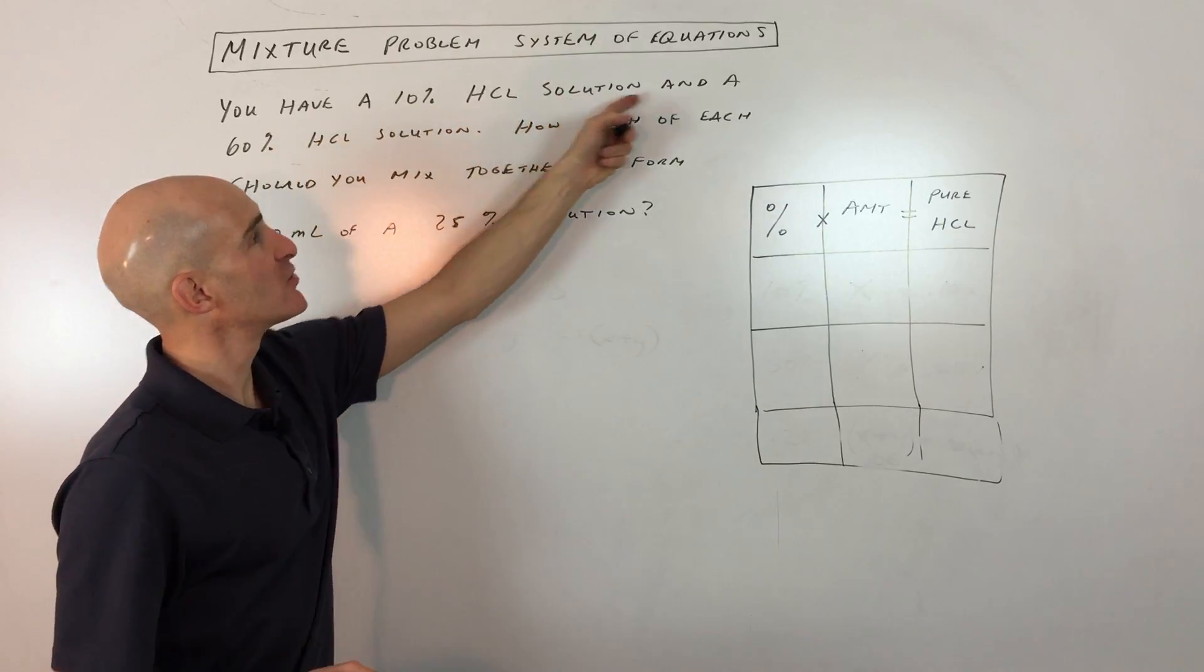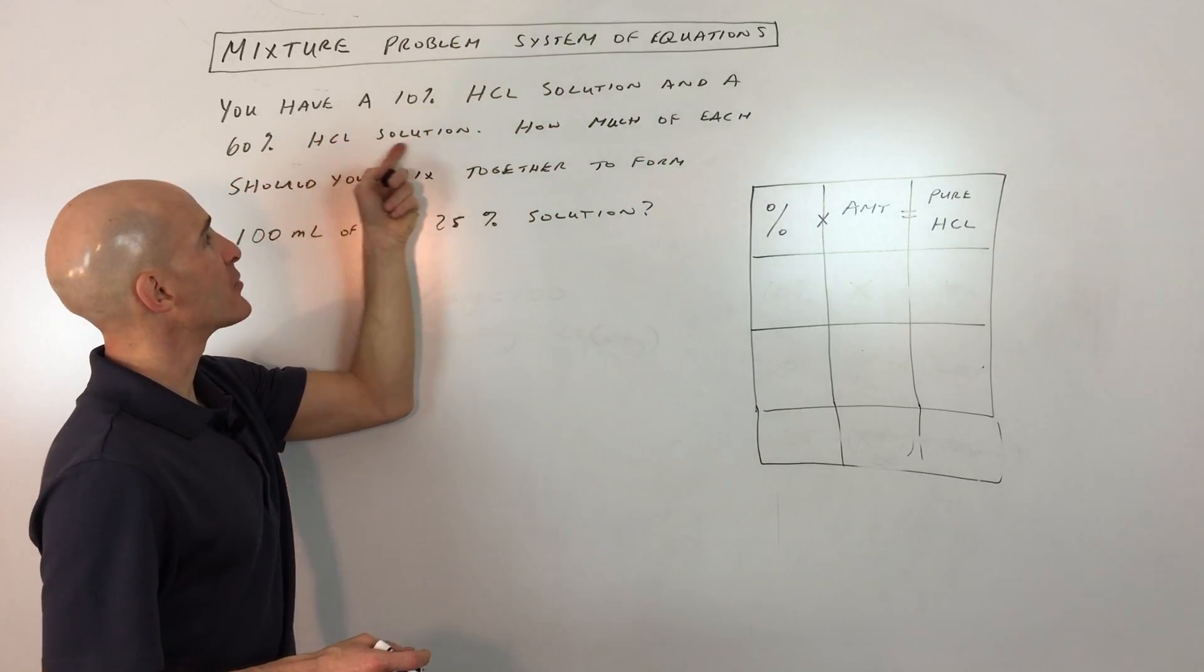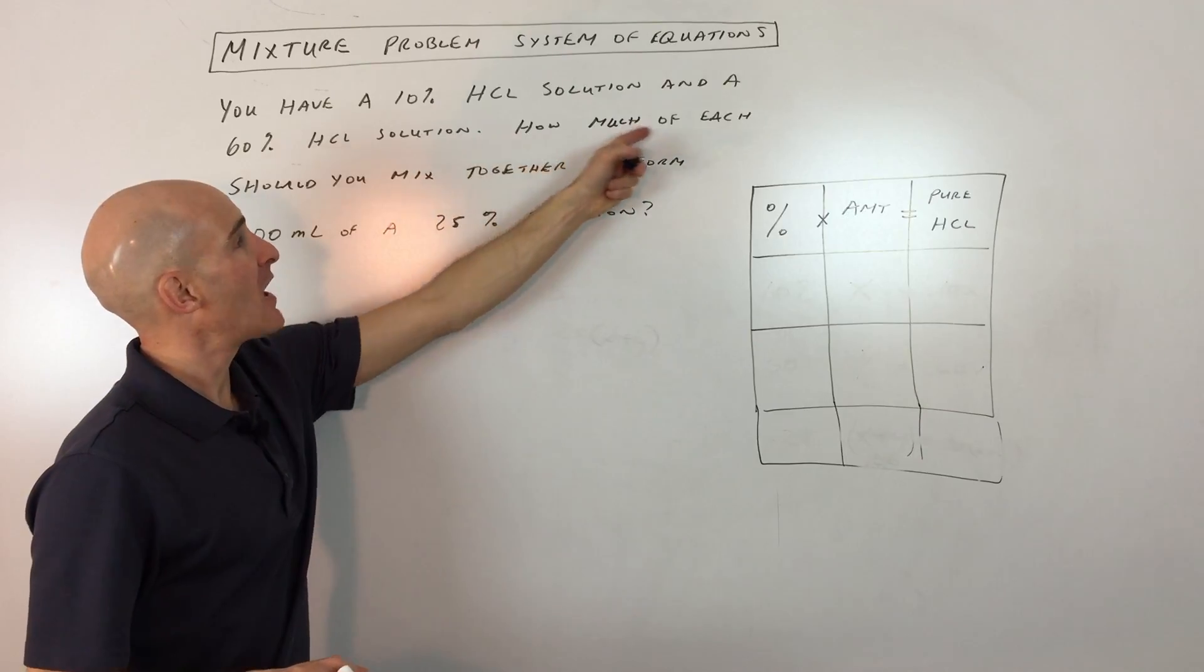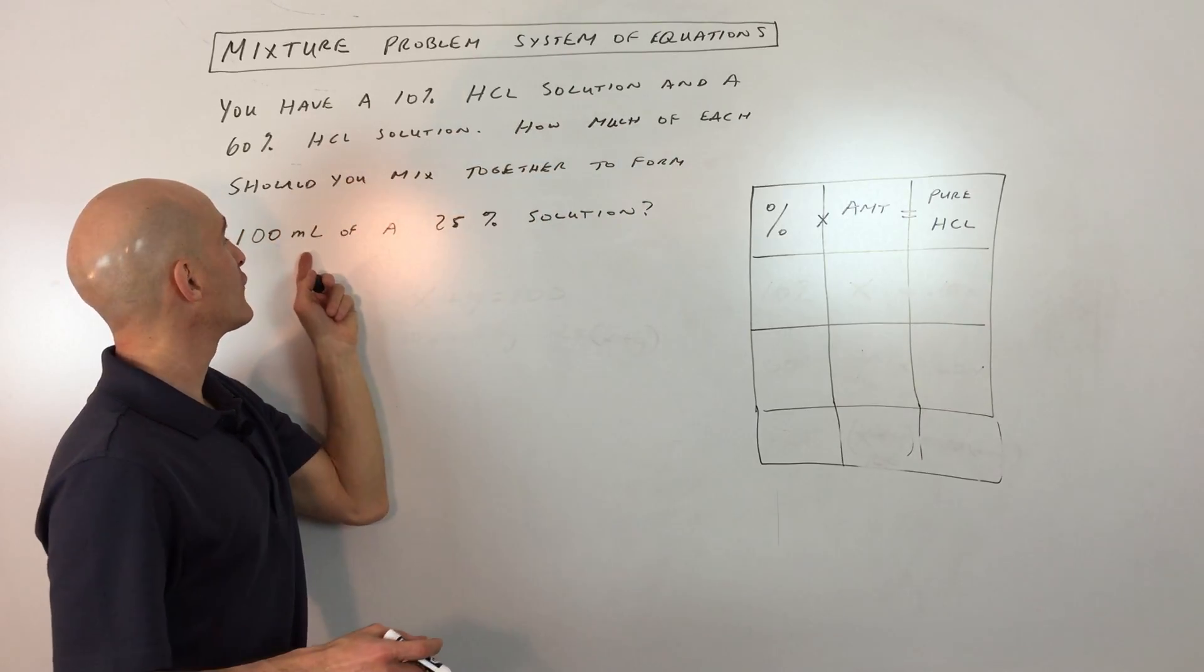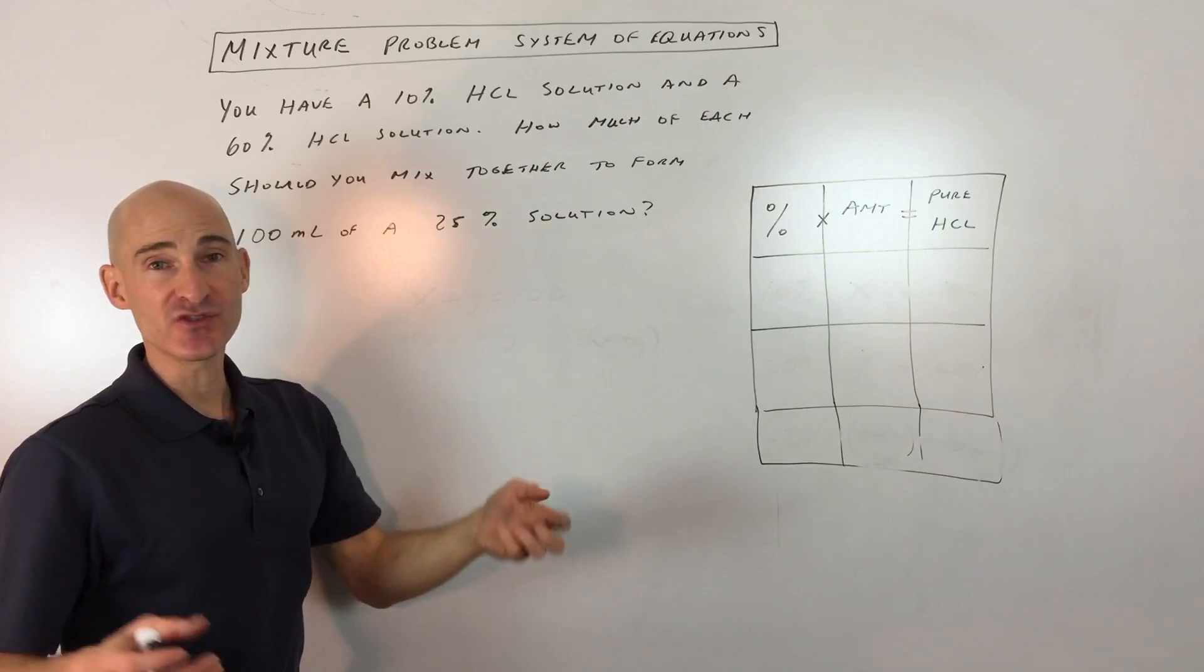So you have a 10% hydrochloric acid solution and a 60% hydrochloric acid solution. So how much of each should you mix together to form 100 milliliters of a 25% solution?